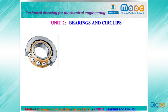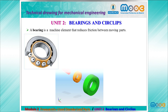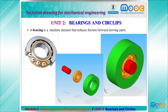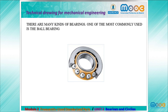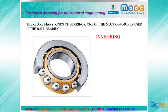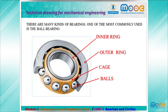In Unit 2 we are going to talk about bearings and circlips. A bearing is a machine element that reduces friction between moving parts. We have the hub, the shaft, and the bearing between hub and shaft. There are many kinds of bearings; one of the most commonly used is a ball bearing. It has an inner ring, an outer ring, a cage, and balls, which are the rolling elements — in this case they are spheres.